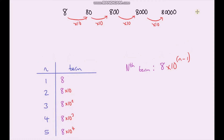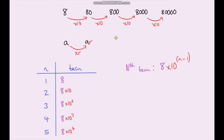Now we've looked at two geometric sequences. Let's come up with a general rule for the nth term of any geometric sequence. I'll use the letter a to represent the first term. The second term is the first term multiplied by the common ratio, which I'll call r — so it's ar. The third term is ar multiplied by r, the fourth term is multiplied by r again, and the fifth term is multiplied by r once more.